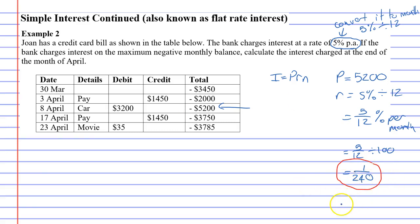Now N is the number of time periods, which is just one month because we're calculating at the end of the month. Let's use our formula: I equals P times R times N, which is 5200 times 1 over 240 times 1. If I round it, I get $21.67. So at the end of the month of April, that's how much interest the bank's going to charge.